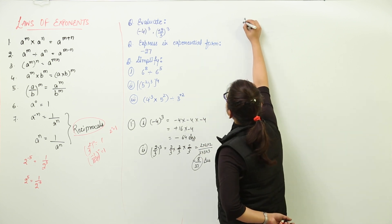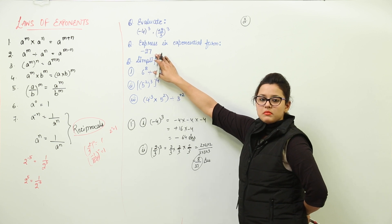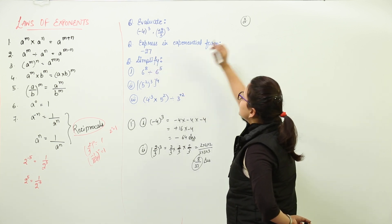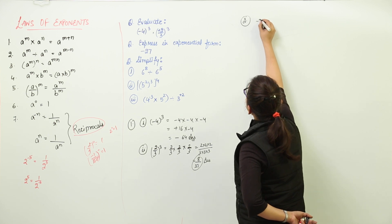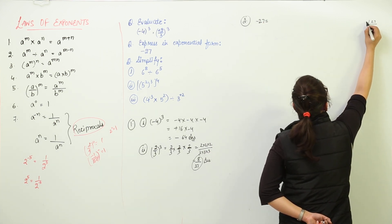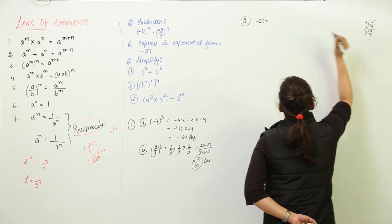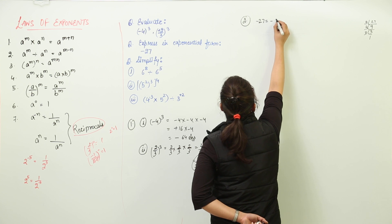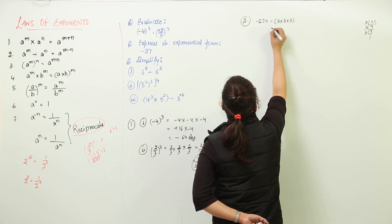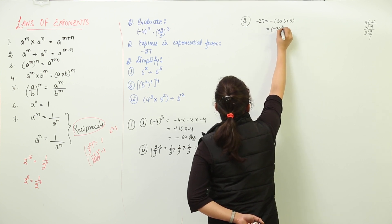Moving to the second question: writing minus 27 in exponential form. Minus 27 can be written in exponential form only when we take out its factors. So the factors of minus 27 are minus 3 into 3 into 3, which can be written as minus 3 raised to power 3.